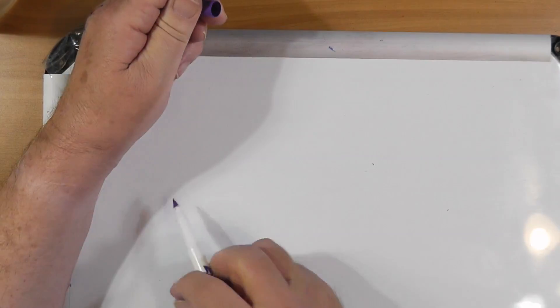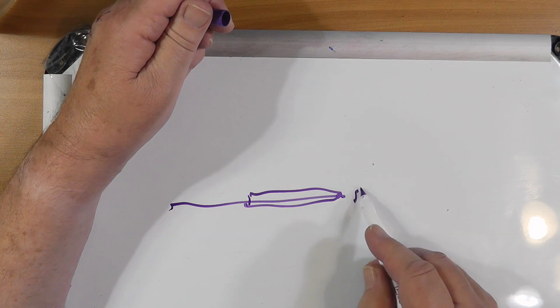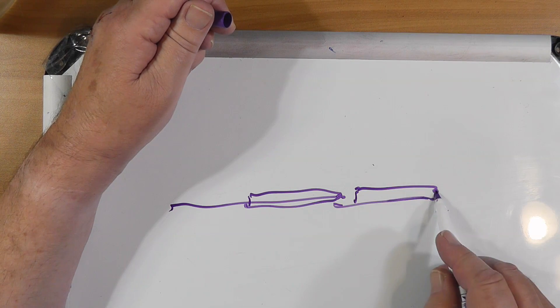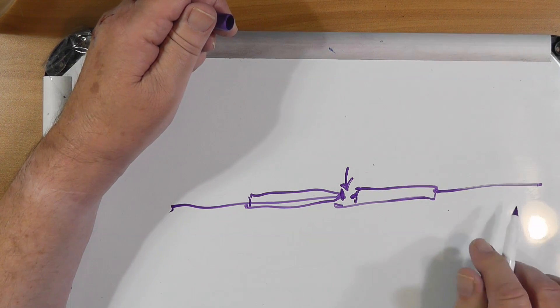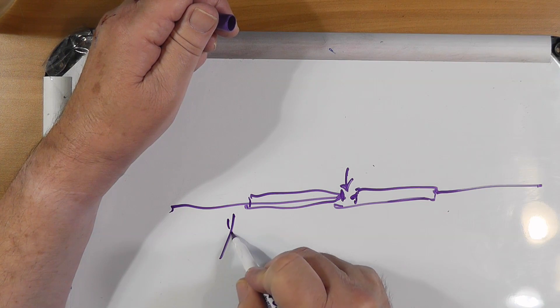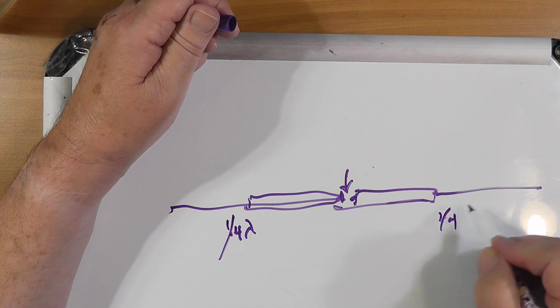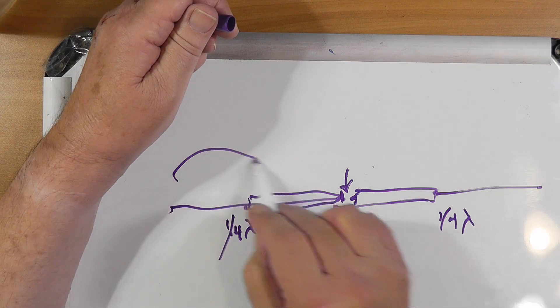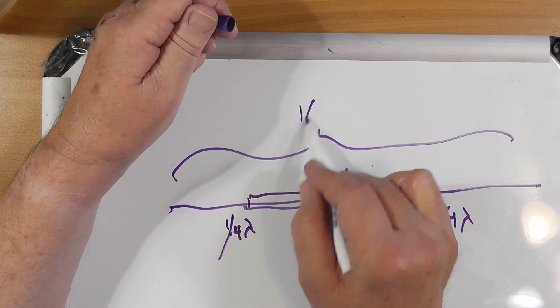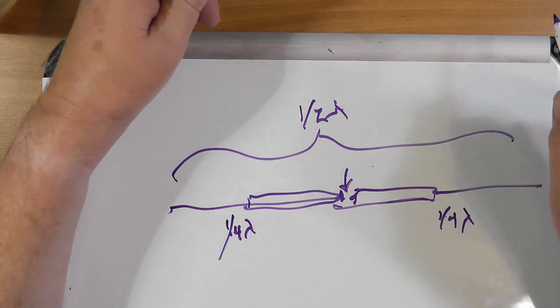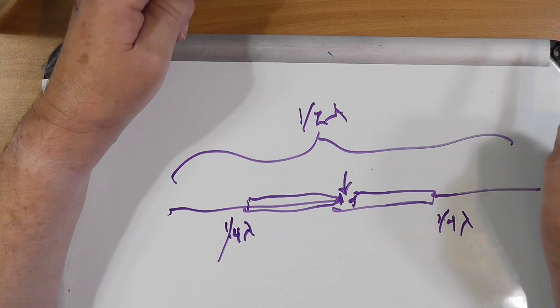Now, if you take a hamstick, here's the thick part, and you take another hamstick like this, and you feed these right here, you have one quarter wavelength. This is one quarter wavelength. The overall length electrically is one half wavelength, and you have a dipole. You have a dipole. And yes, you can do that.